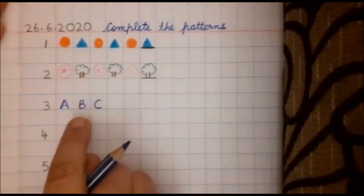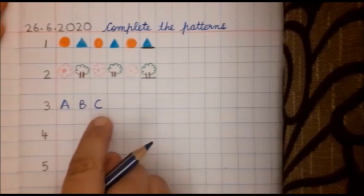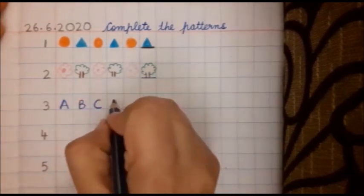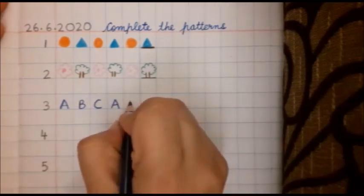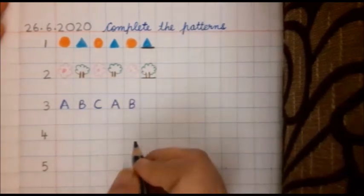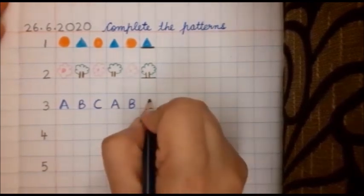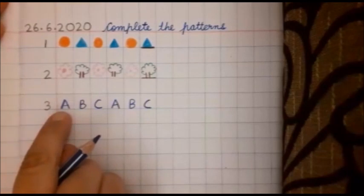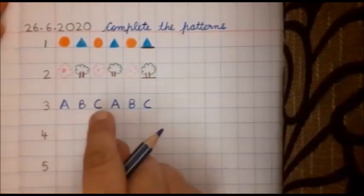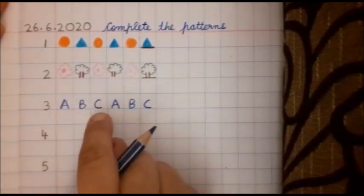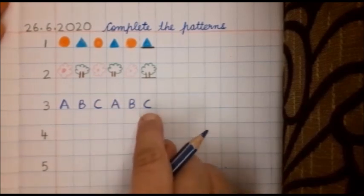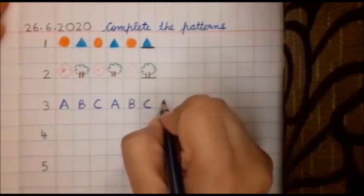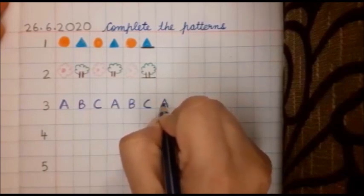A, B, C. Again, A, B and C. A, B, C. A, B, C. A, B, C. A.